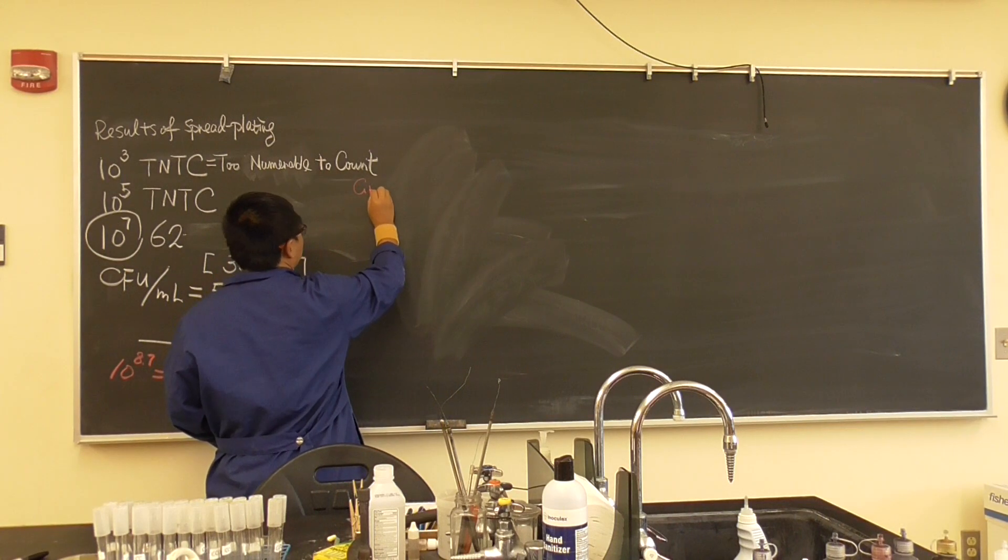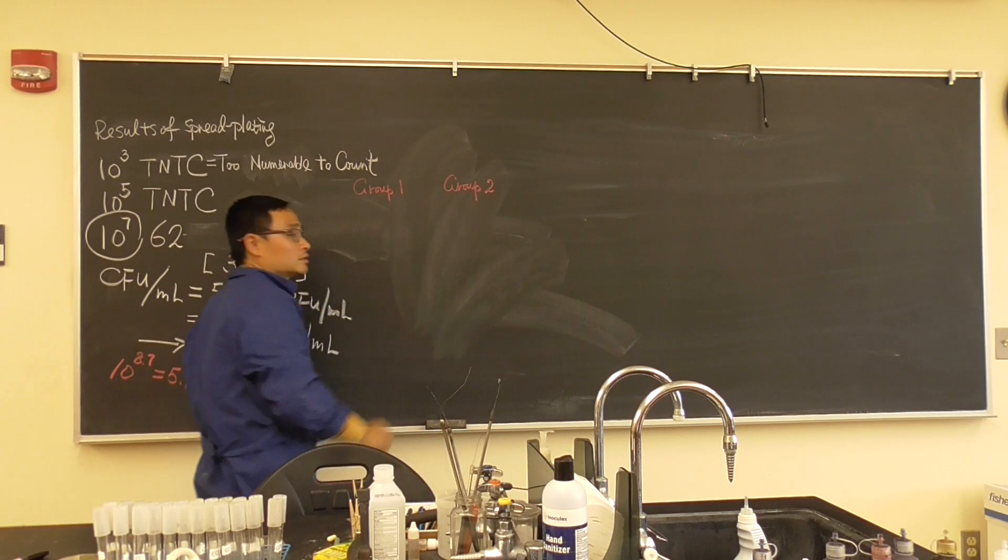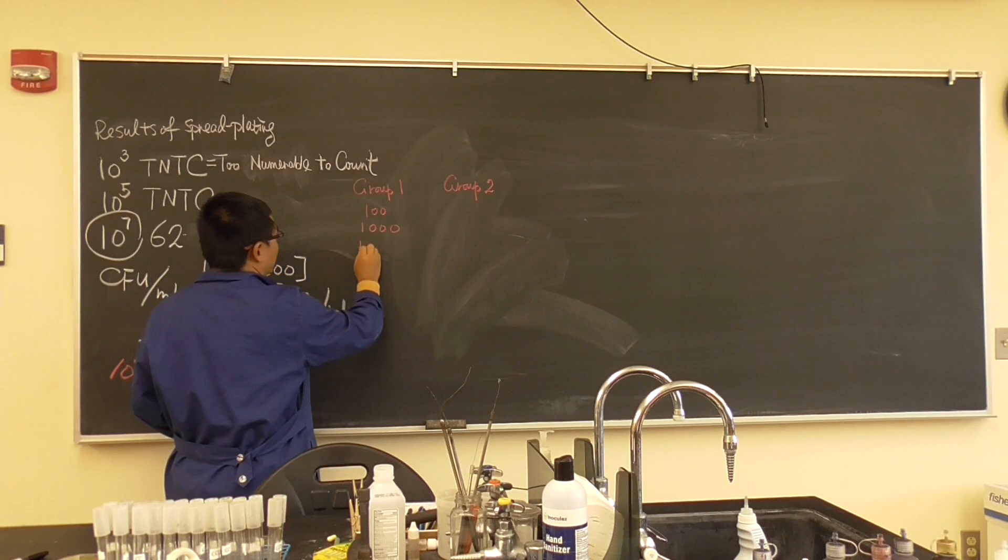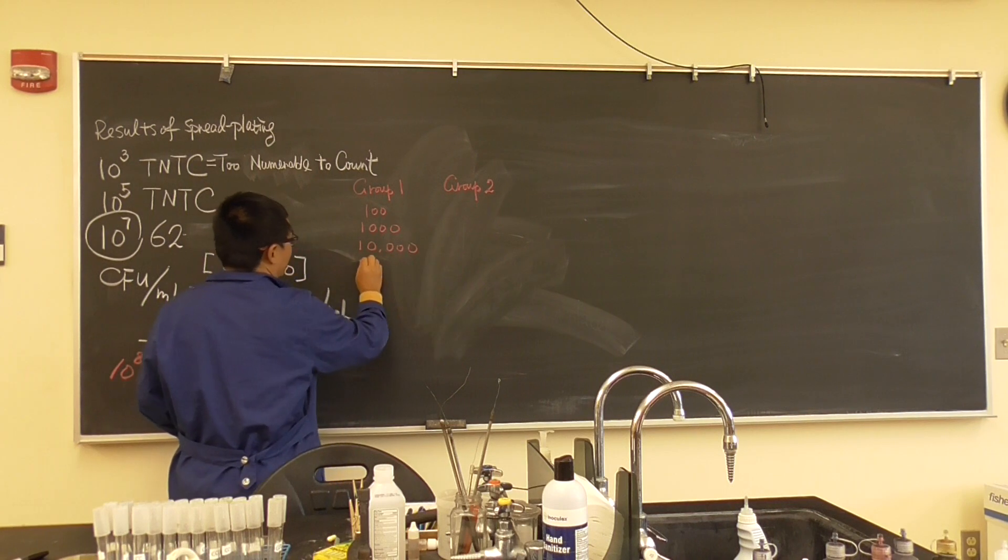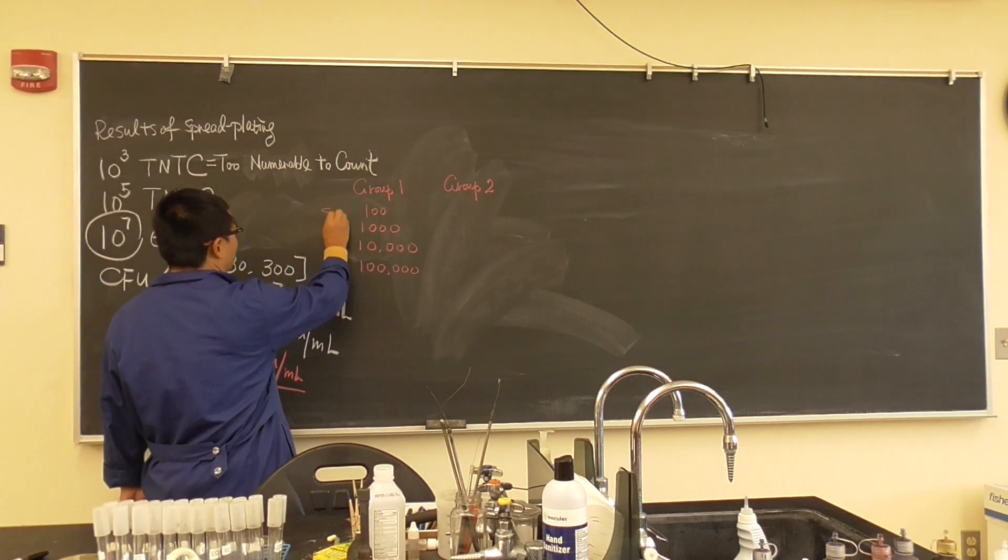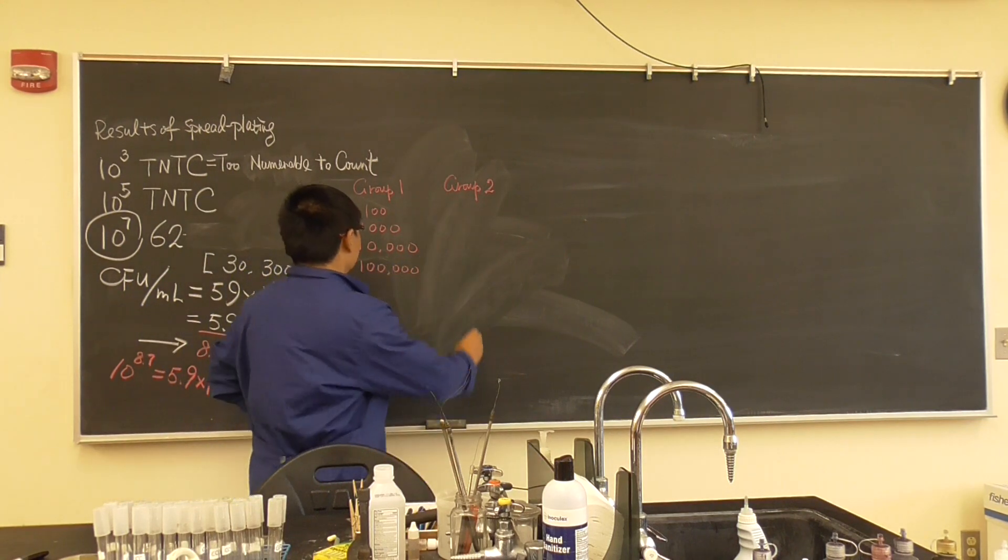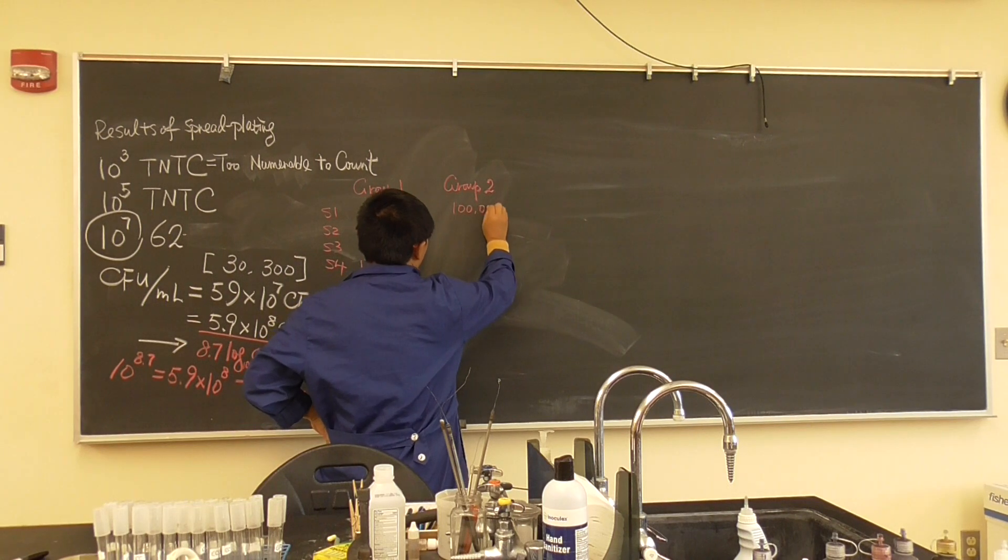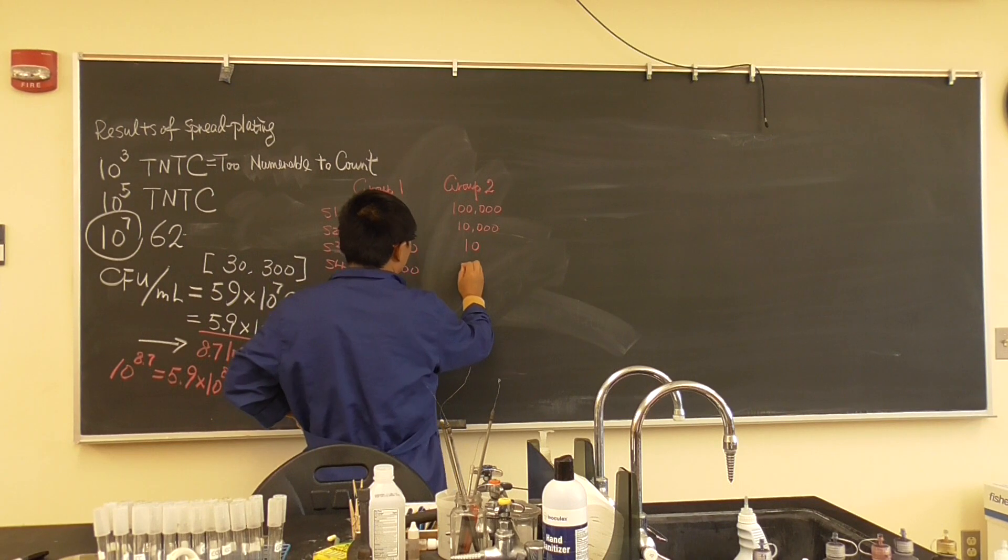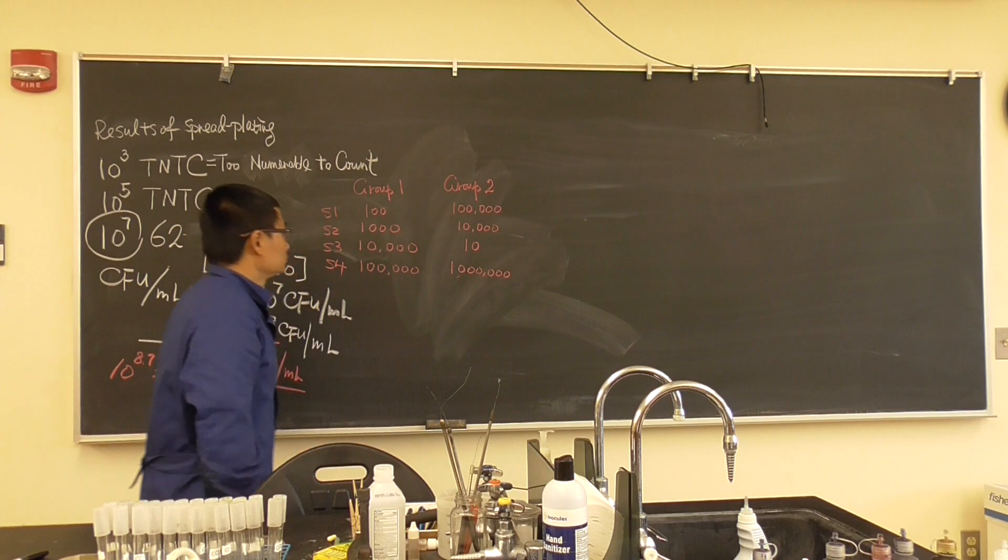Let's talk about that. I have two groups of bacteria. I have group one, I have group two. Let's say I have 100 cells, I have 1,000 cells, I have 10,000 cells, I have 100,000 cells. Let's say this is sample one, sample two, sample three, sample four. I have group two: I have 100,000 cells, I have 10,000 cells, I have 10 cells, let's say I have 1,000,000 cells.